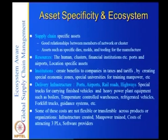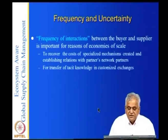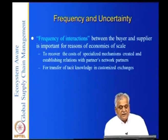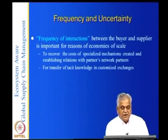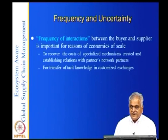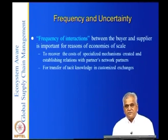Some of these assets are not flexible or transferable across products or organizations. Infrastructure created, manpower trained, and the cost of attracting 3PL software providers are not flexible — you cannot transfer them to somebody else. With asset specificity, you are stuck with that particular product. The supplier who has created all these facilities for you may demand a long-term contract, saying they have invested in asset-specific systems and need you to stay with them or compensate the money spent on these asset-specific systems.